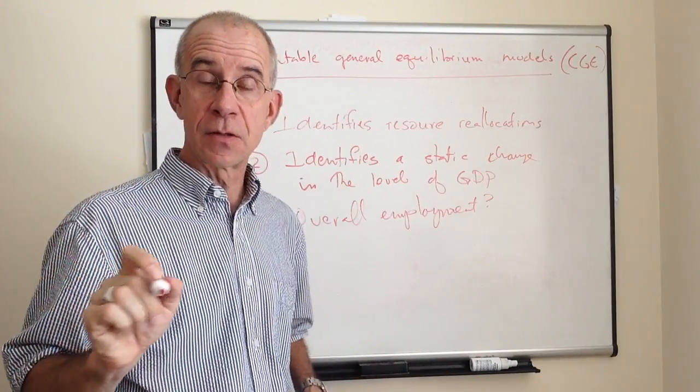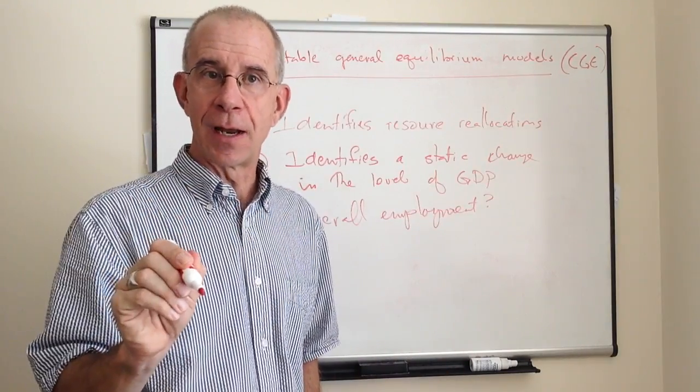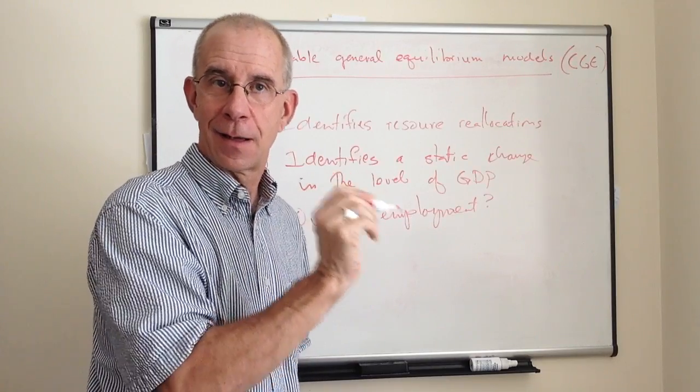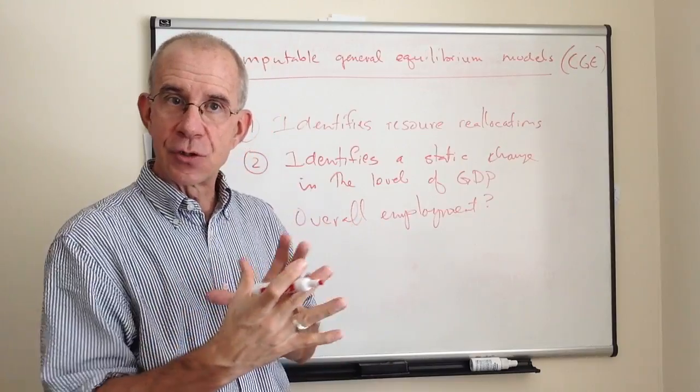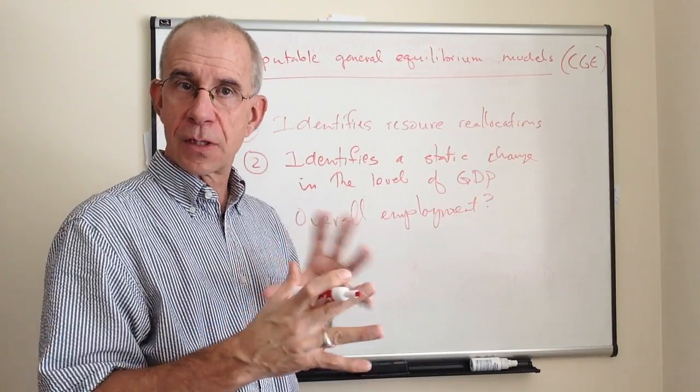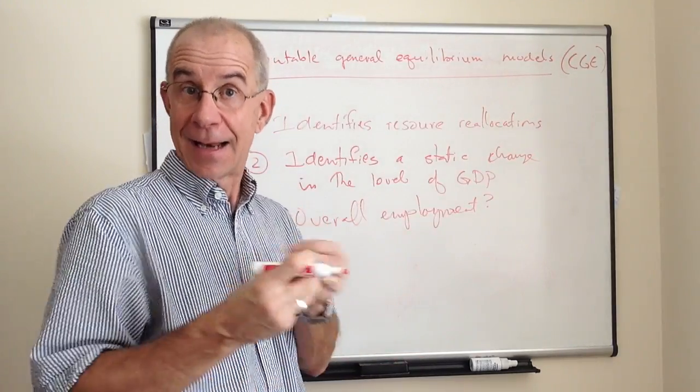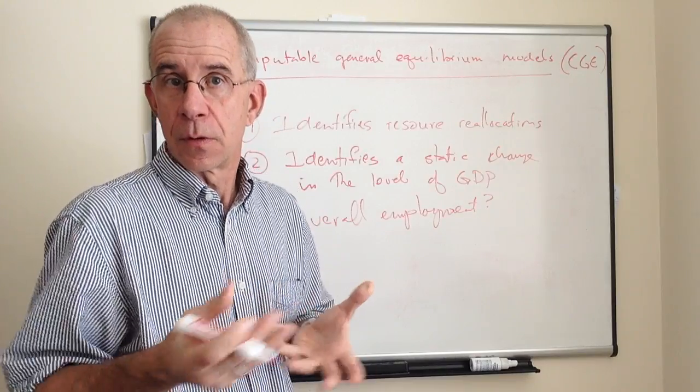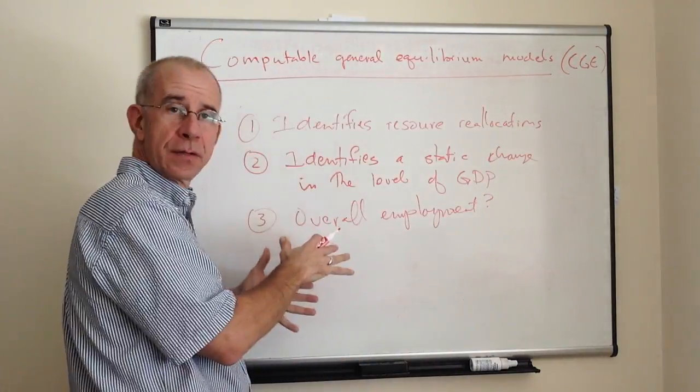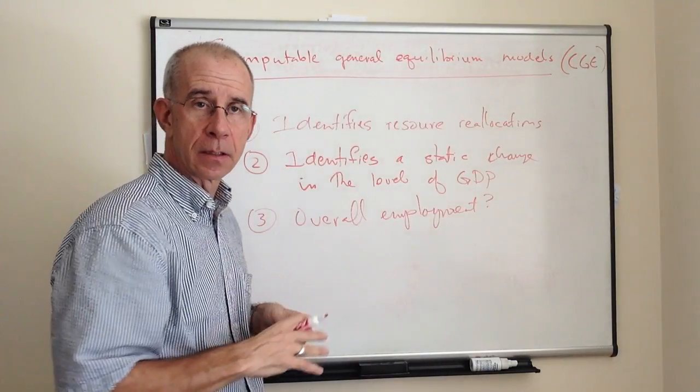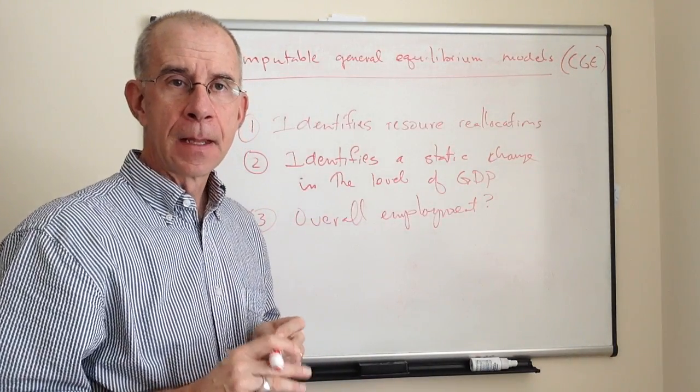What is a typical thing that they do is they keep the level of employment fixed, let employment change in different sectors, and then let the wage change in order to get back to recreate that overall level of employment. So the adjustment is usually at the sectoral level and at the price of labor or the wage. These are the things that it's really particularly good at.